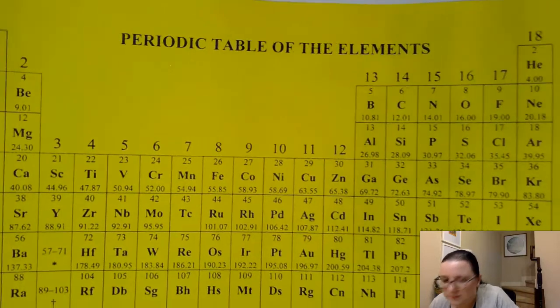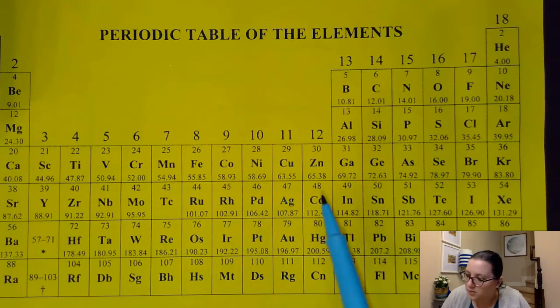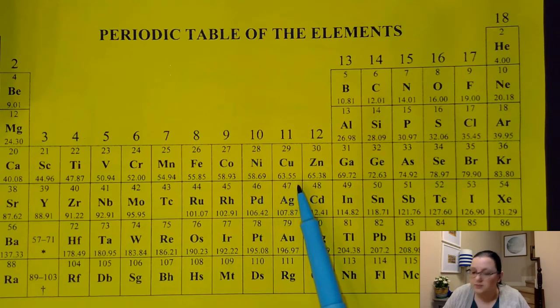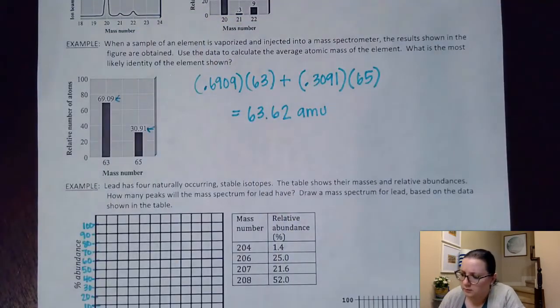If I go look at my periodic table here, I don't see anything that's exactly on the nose 63.62. The closest thing I see is copper at 63.55. So more than likely, this guy is copper here, okay?